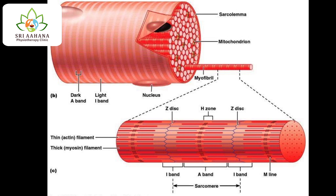The area of only the actin filament which is linked to the Z-disc is called the I-band, or the isotropic band. The central portion with no overlap and only the thick filament is called the H-zone. The M-band is in the center of this H-zone, which has only the thickened part of the myosin molecules.